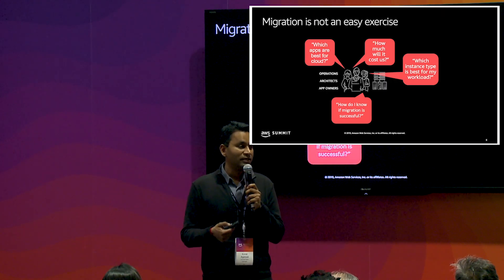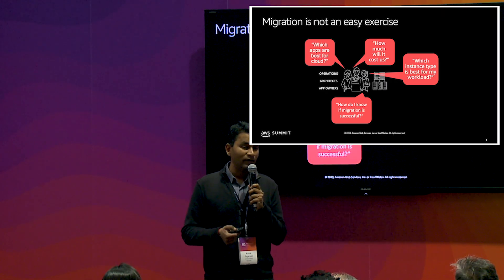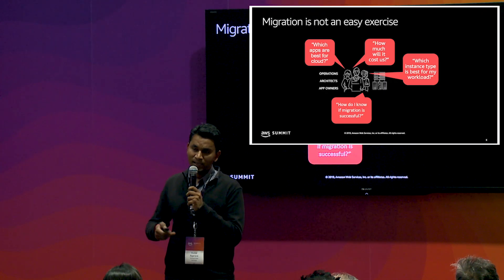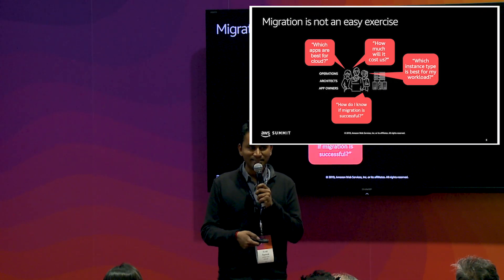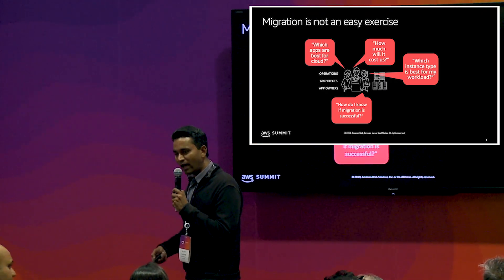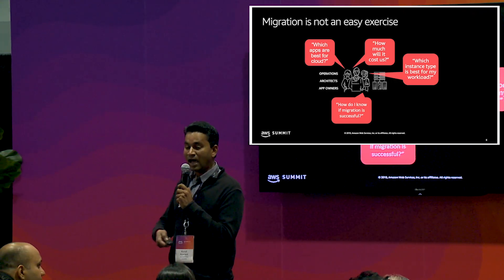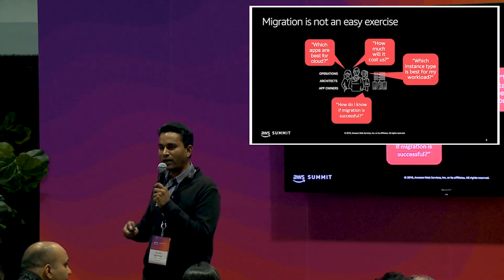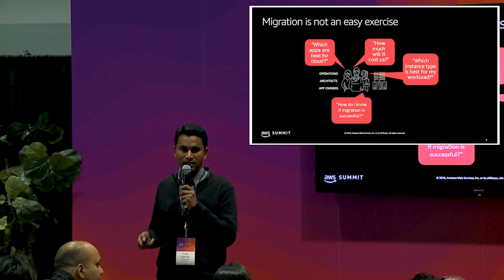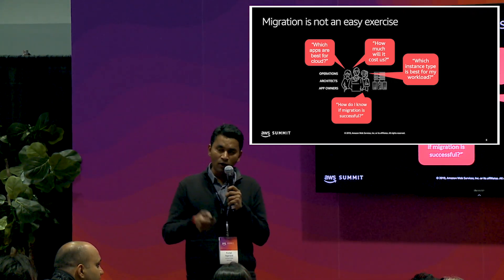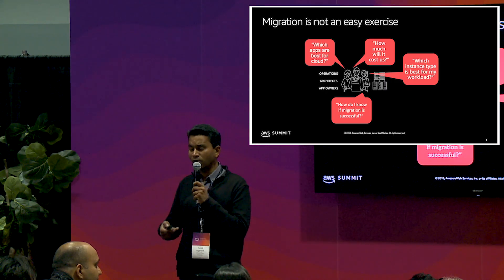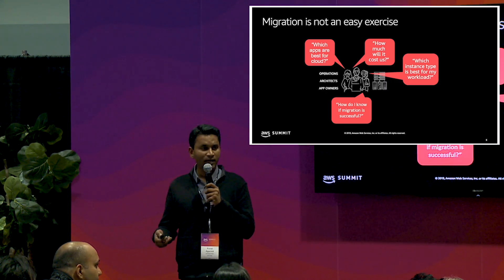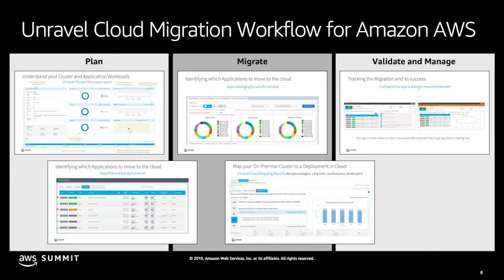What Unravel can do is help you get really scientific and surgical in understanding what's the best instance type, what's the right environment, and how big that environment should be on any given day of the week — so you can use auto-scaling features up and down to run your code in a very optimized and cost-effective fashion.